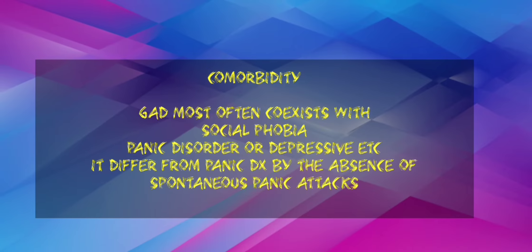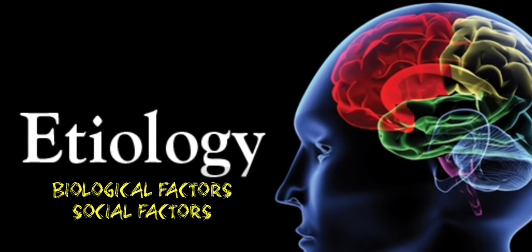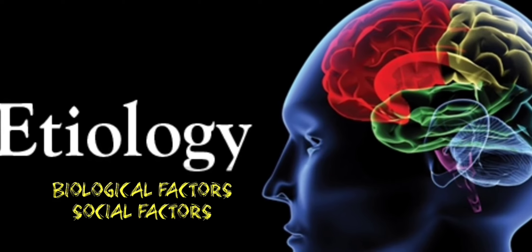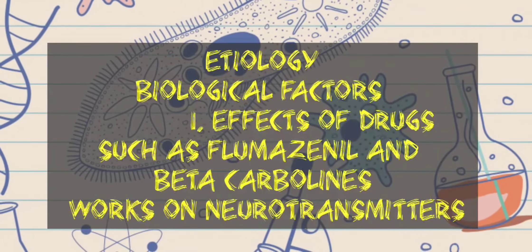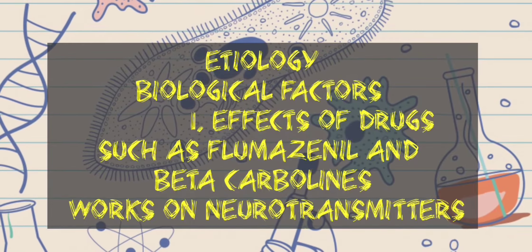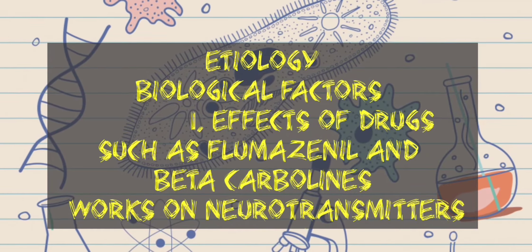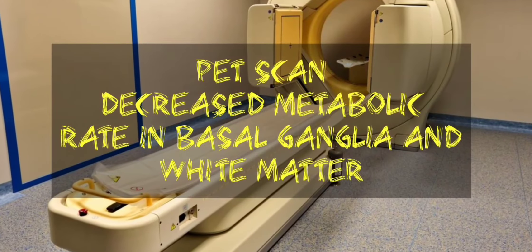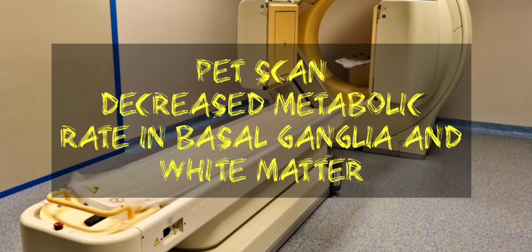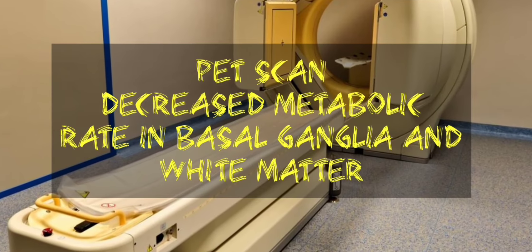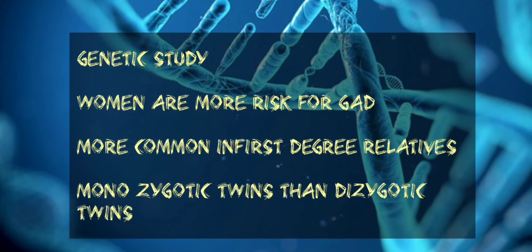It differs from panic disorder by the absence of spontaneous panic attacks. Etiology: the exact cause is unknown. Biological factors — effects of drugs such as flumazenil and beta-carbolines work on the neurotransmitter system. Positron emission tomography shows decreased metabolic rate in the basal ganglia and white matter.